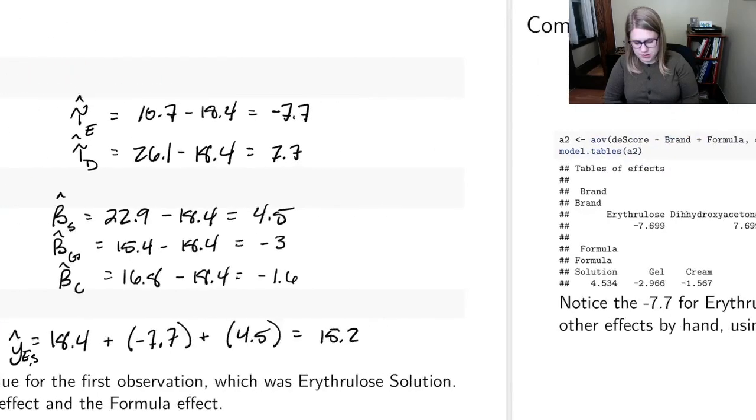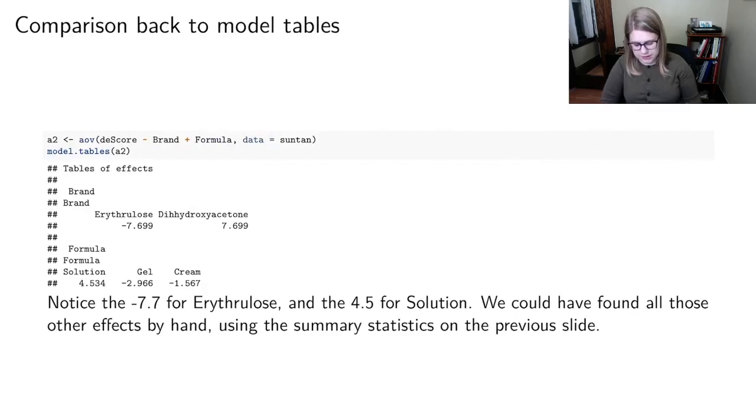So let's just look at the model.tables. So if I had run this in R, dscore tilde brand plus formula, data equals suntan, and looked at the model.tables of that model, I would get the effects for the brand. So that was the negative 7.7 and positive 7.7. And then I've got my effects for the formulas,